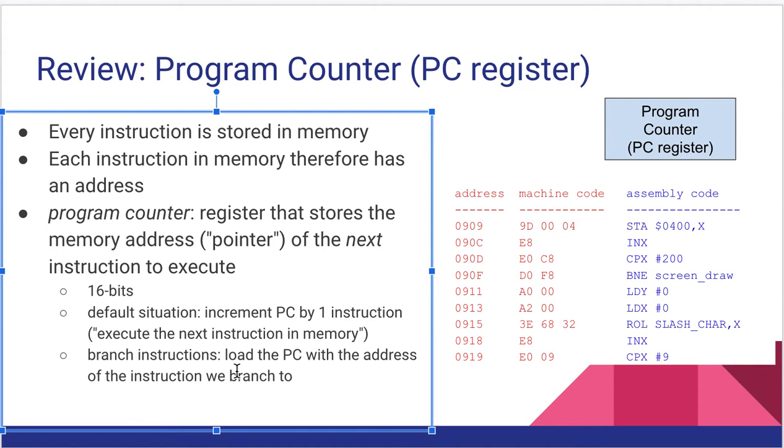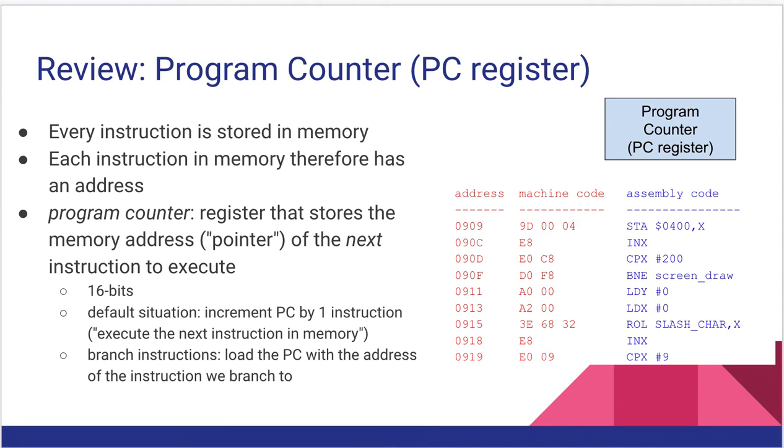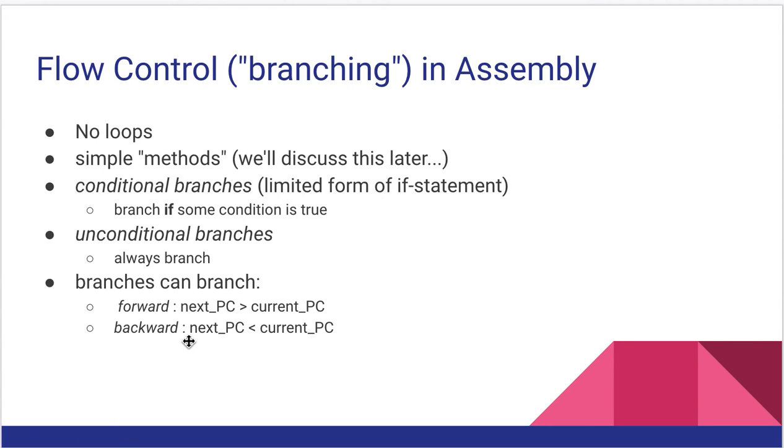Now branch instructions shake that up. So we can load the PC with something other than the next instruction in memory, meaning the next instruction to be executed would be something somewhere else on this page. It allows us to jump around. So now we need to talk about how we do flow control or branching in assembly from a high level. Assembly does not have loops. There is no strictly loop construct in assembly.